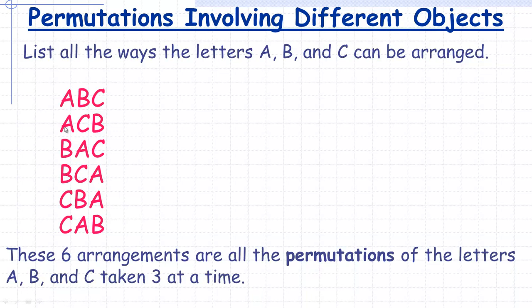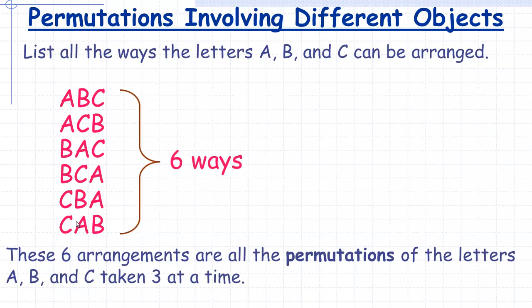Starting with A, I could go A, B, C or A, C, B. If I start with B first, I could have B, A, C or B, C, A. And if I did C first, I could go C, B, A or C, A, B. I'm doing this in order so I don't miss anything. And so those are all the different orders you could write the letters A, B, and C — and notice that there are six ways to do that.